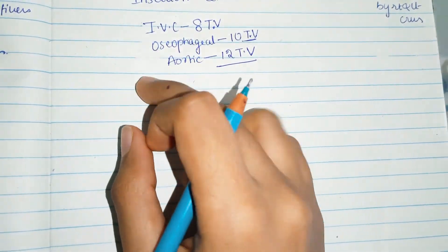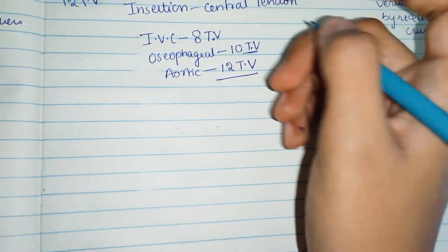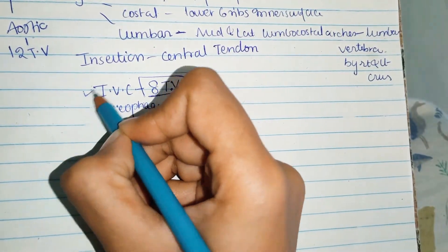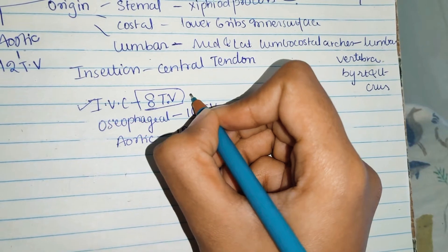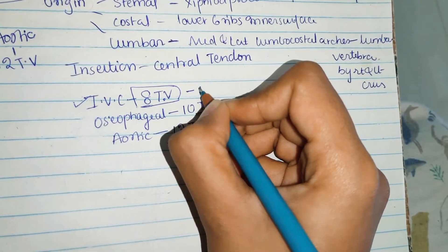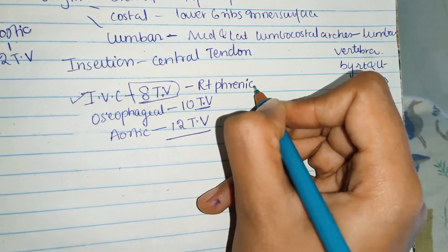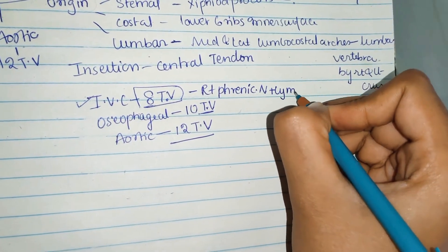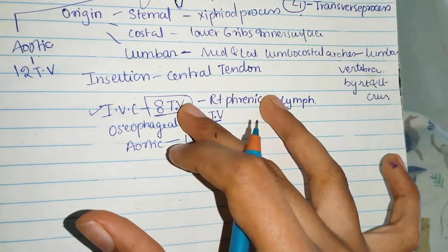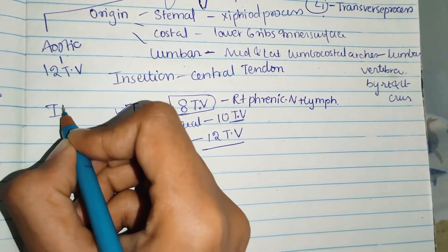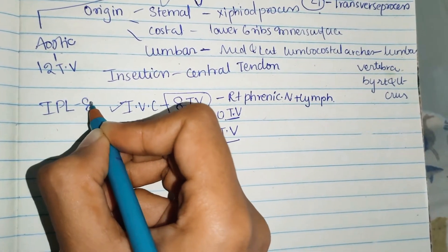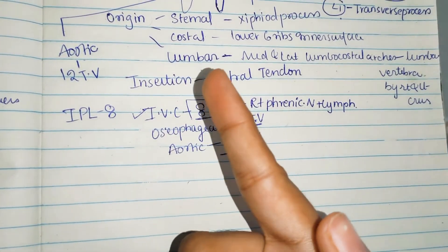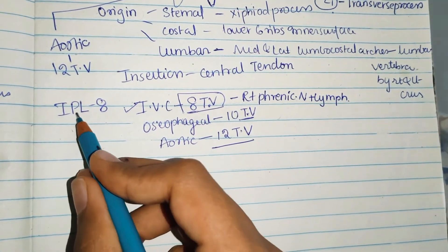Through the inferior vena cava opening at T8, the structures passing are: the inferior vena cava, the right phrenic nerve, and lymphatics. To remember this, use the mnemonic IPL — Inferior vena cava, Phrenic nerve (right), Lymphatics — at 8 o'clock.